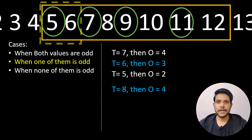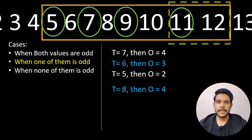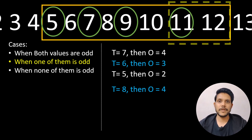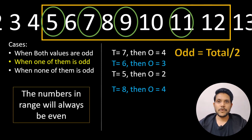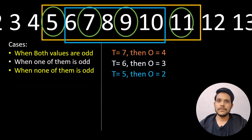We find out how many such windows of size two are possible. We move the window across and reach the end of the range. Since the total number of values in this particular range is even, the number of odd values is nothing but total divided by two. Half the total values are odd and the other half are even.